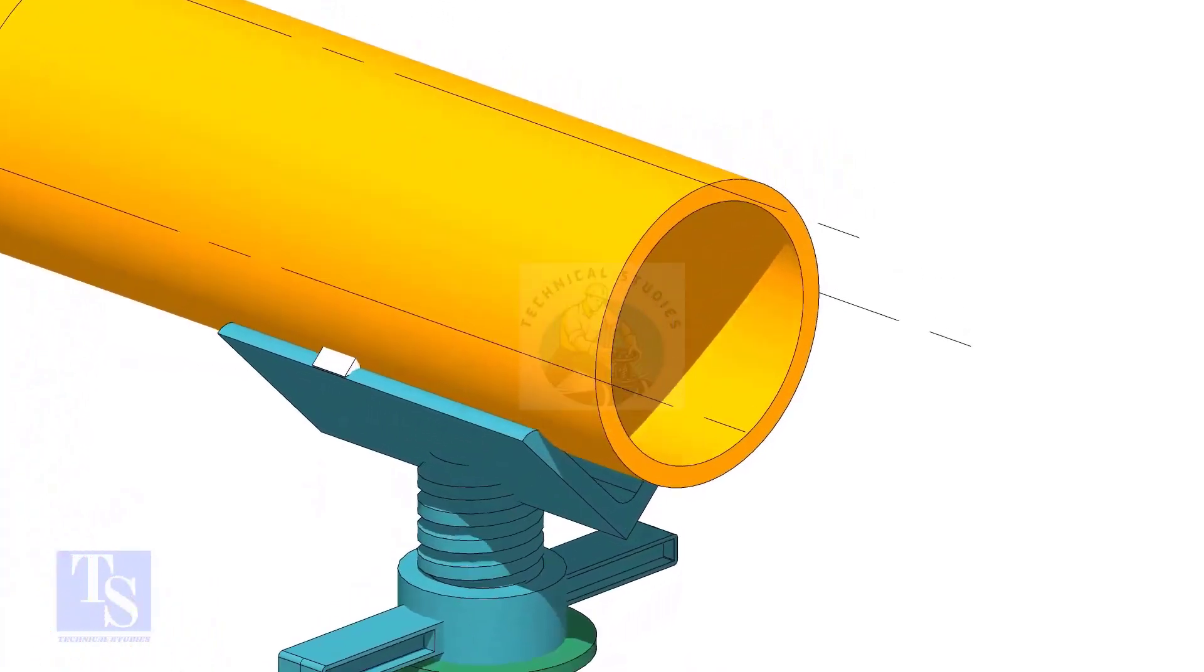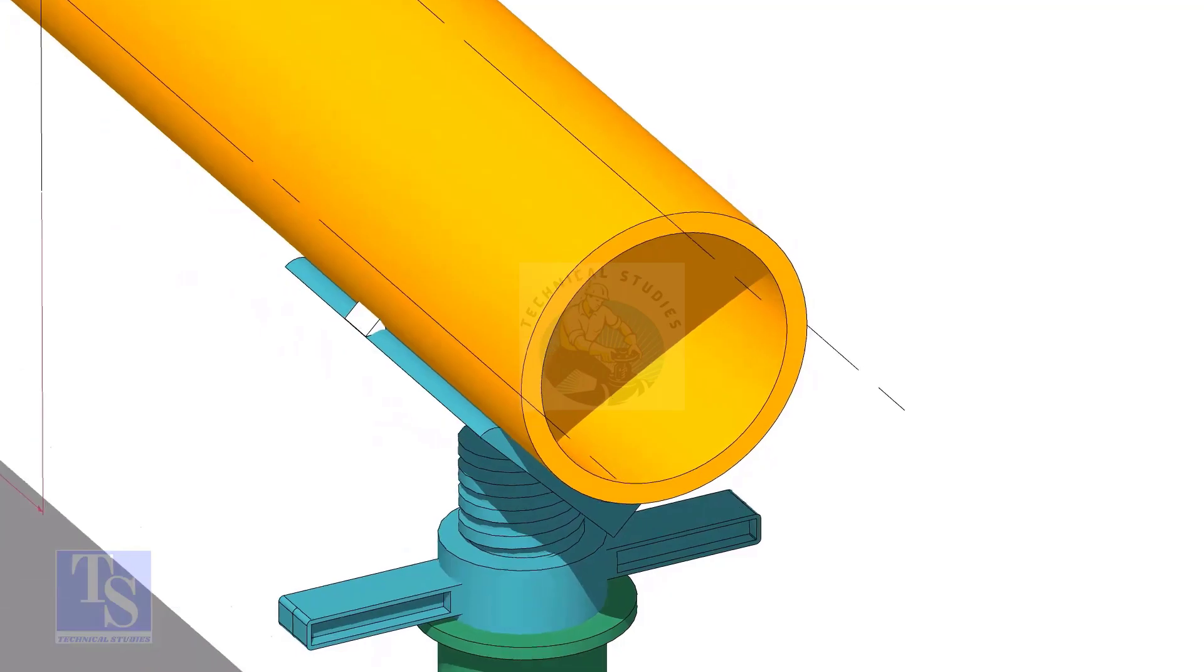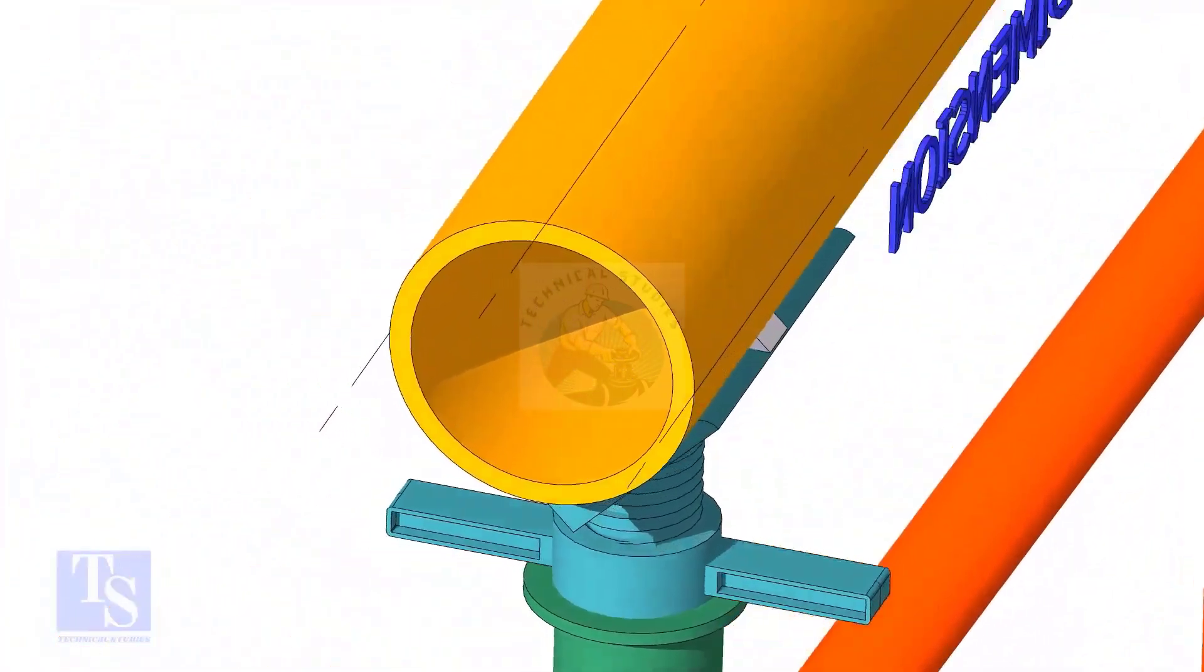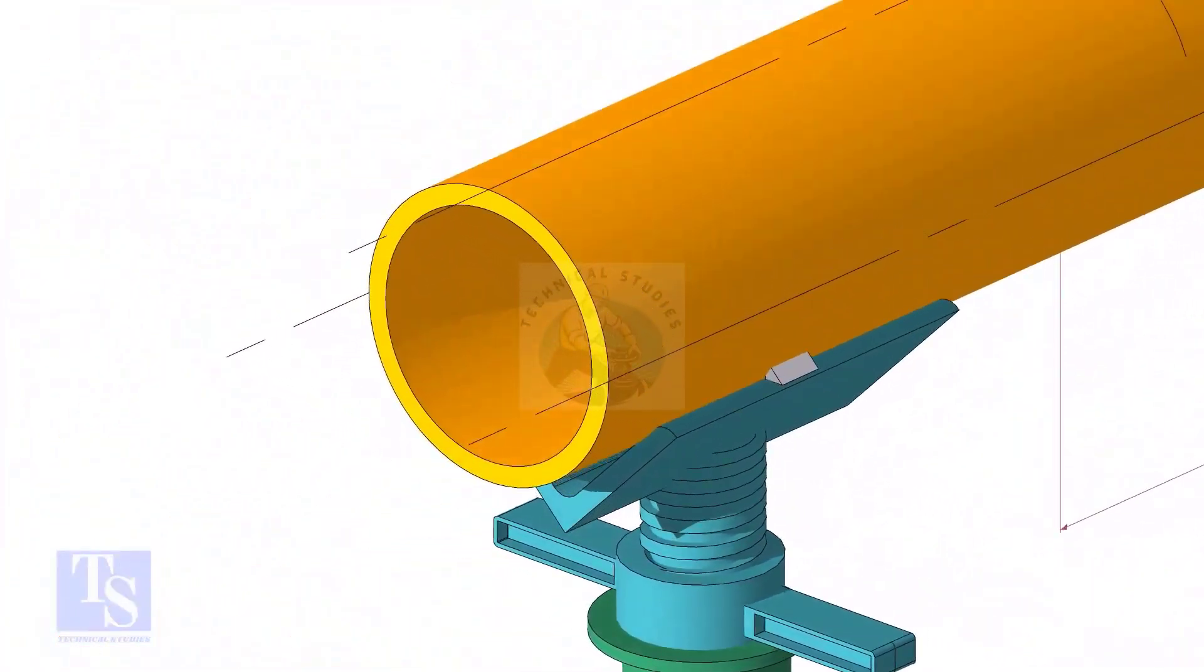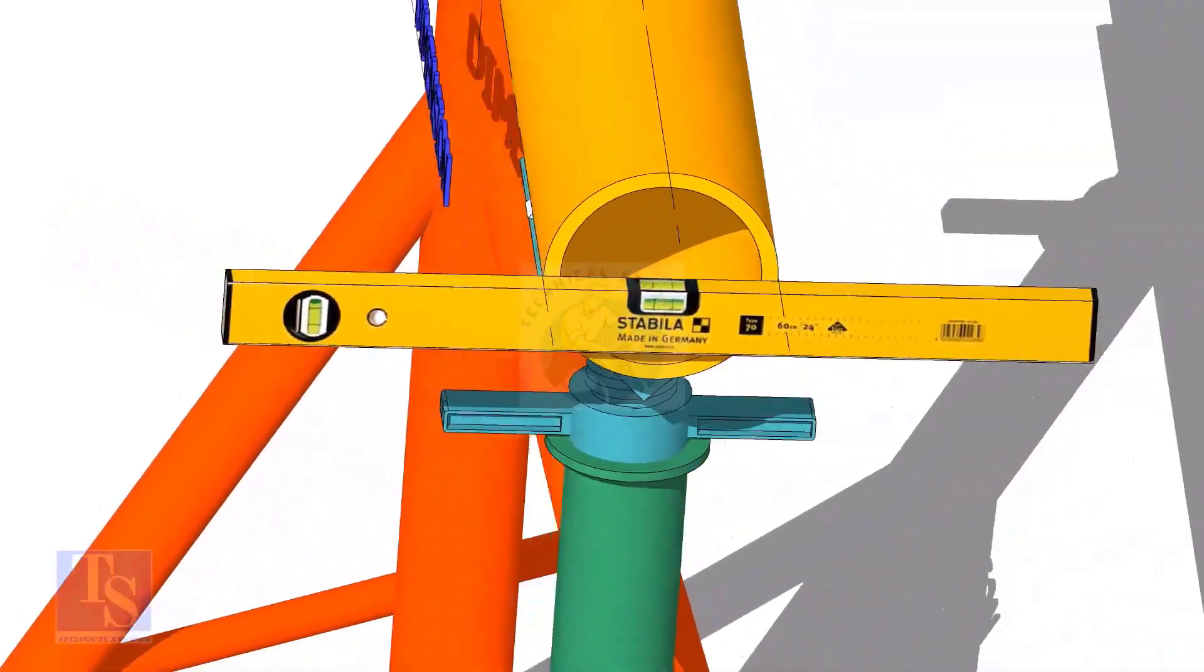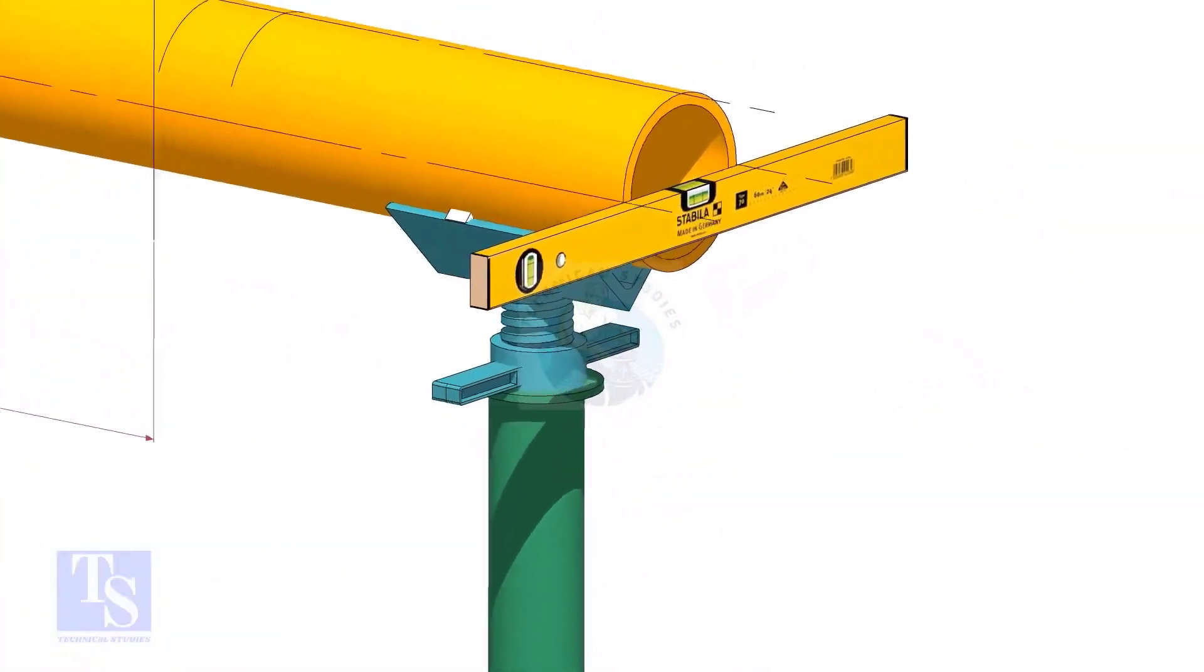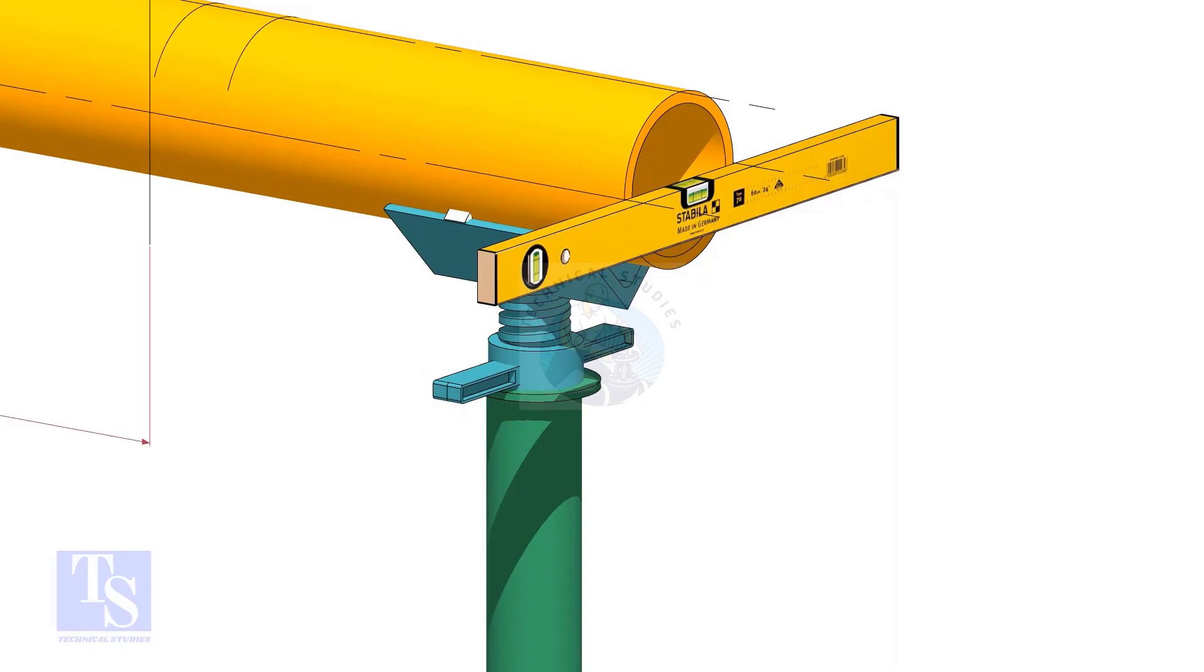After leveling the pipe, mark the center line and two quarter lines. Arrest the pipe, and if required, make small tack welds.